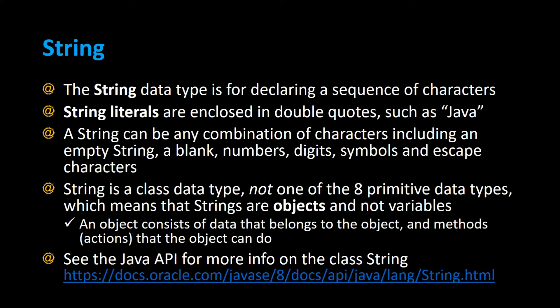String is a class data type, not one of the eight primitive data types, which means that strings are objects and not variables. An object consists of data that belongs to the object and methods or actions that the object can do.